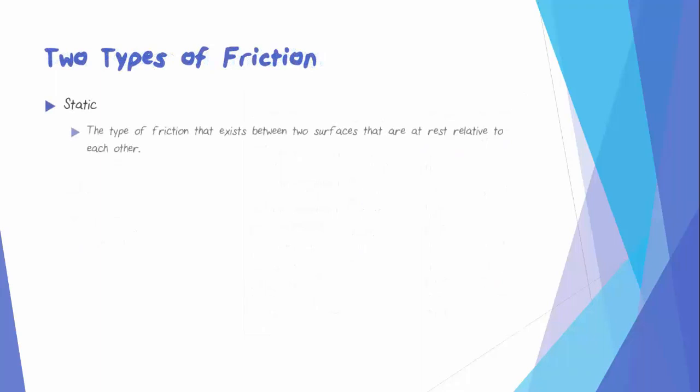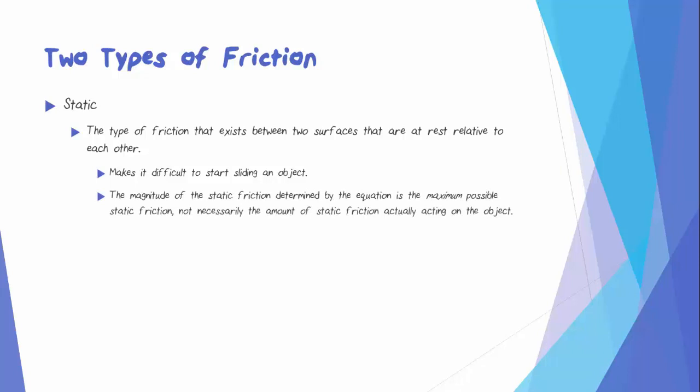Static friction is the type of friction that exists between two surfaces that are at rest relative to each other. This is the type of friction that makes it difficult to start sliding an object. It's important to note that when you calculate static friction, the value you determine from the equation is the maximum possible static friction. It's not necessarily the amount that's acting on the object at that moment.